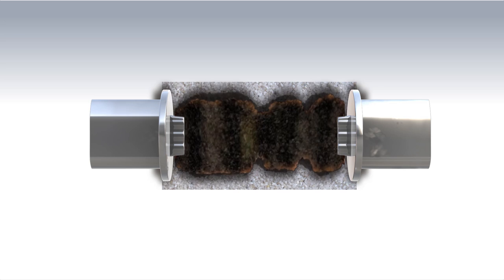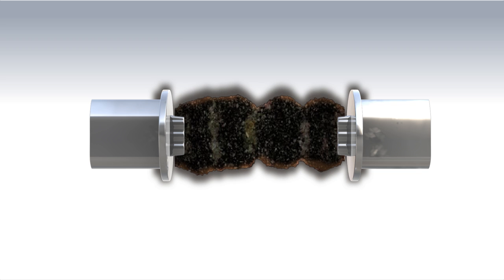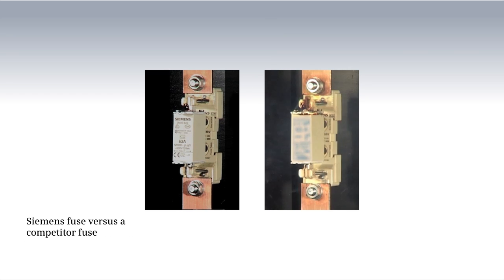The resulting arc on the isolating points is reliably quenched with quartz sand. This real-time scenario shows the fast and reliable disconnection effected by the Siemens fuse.